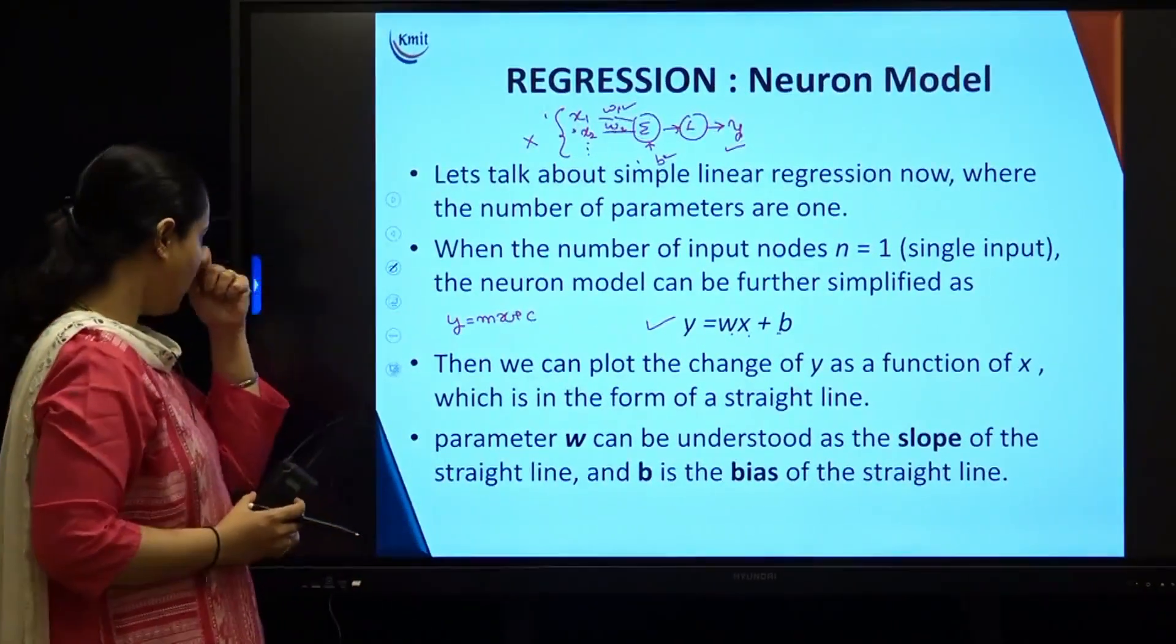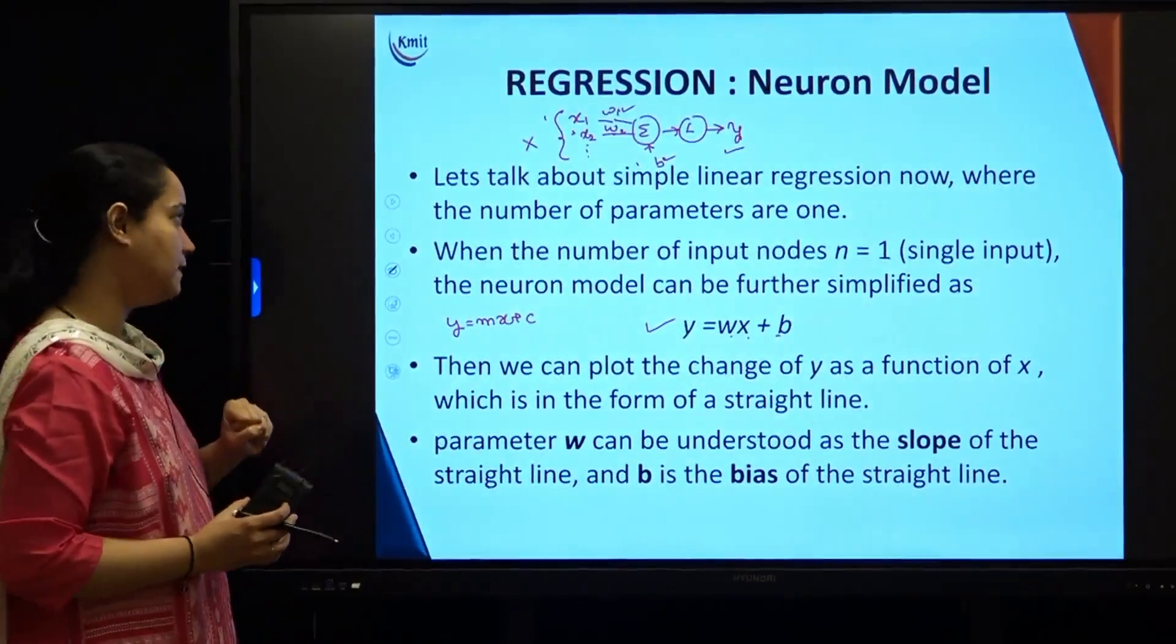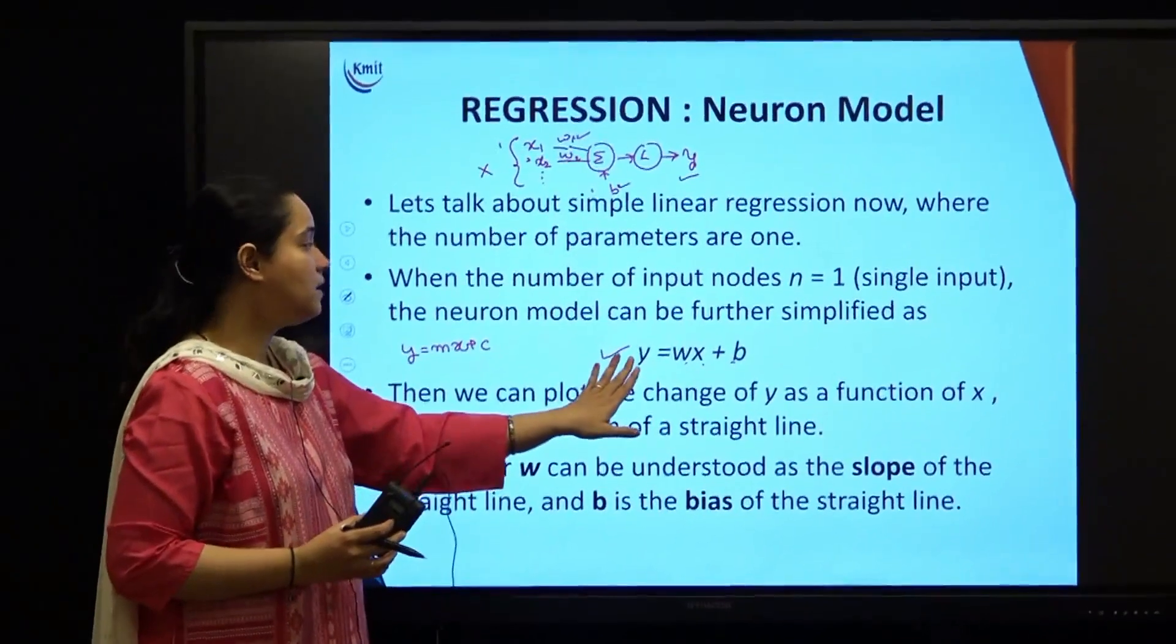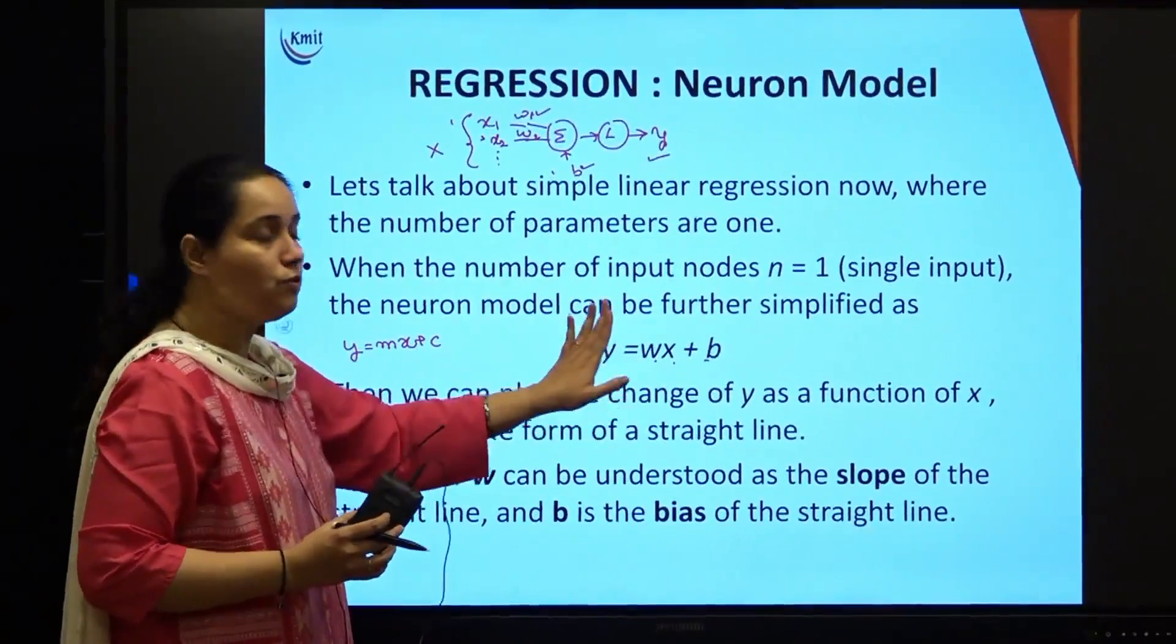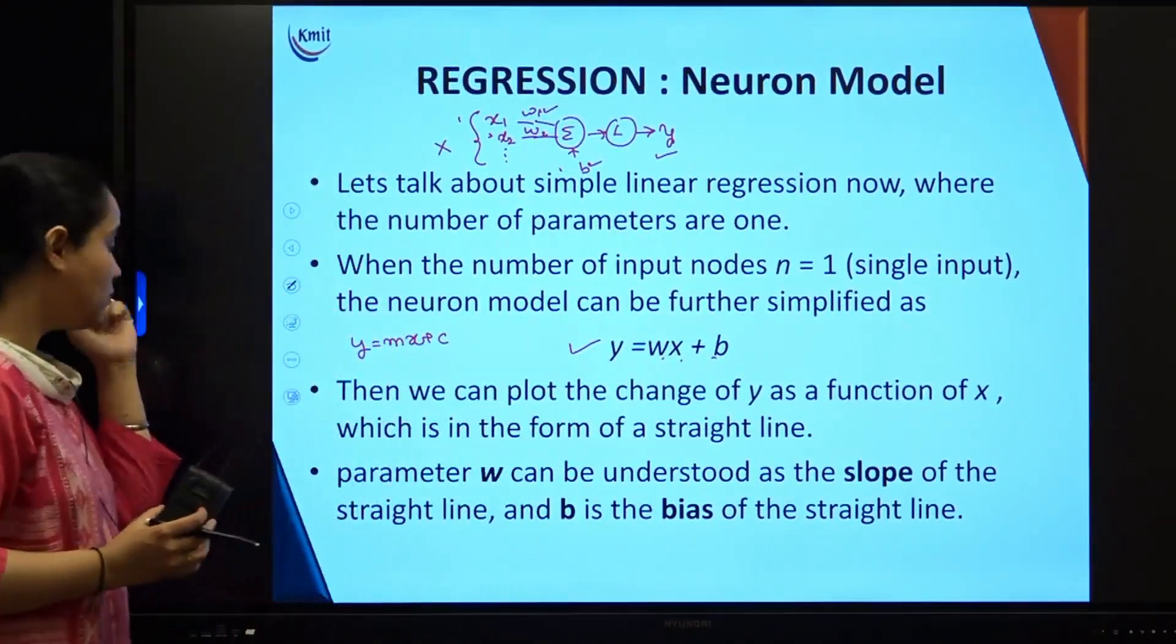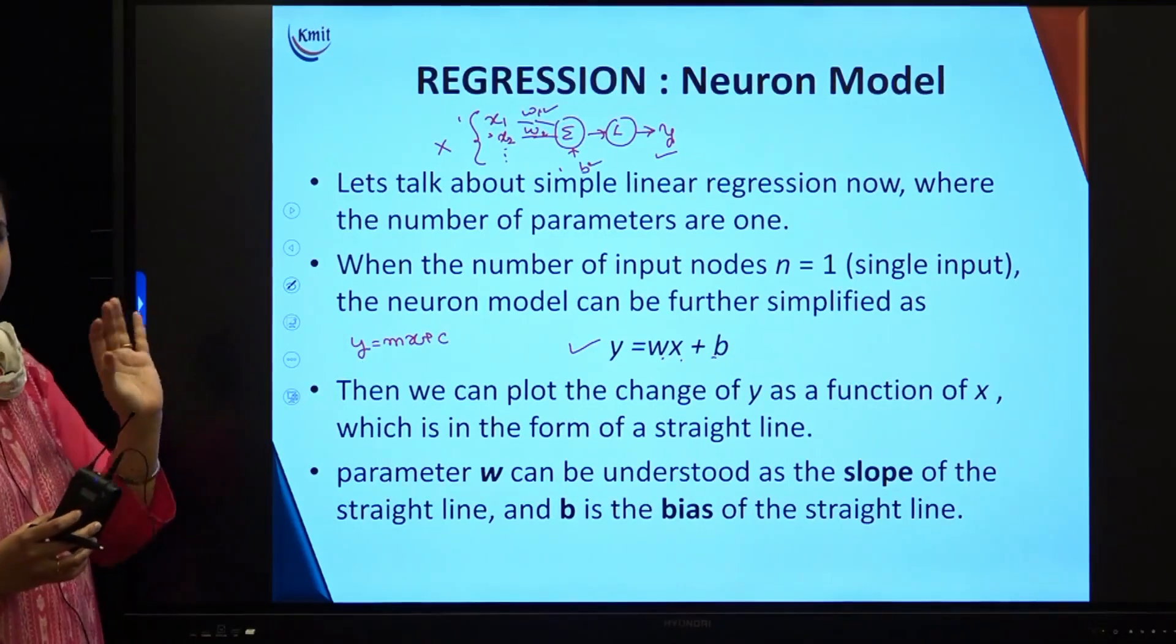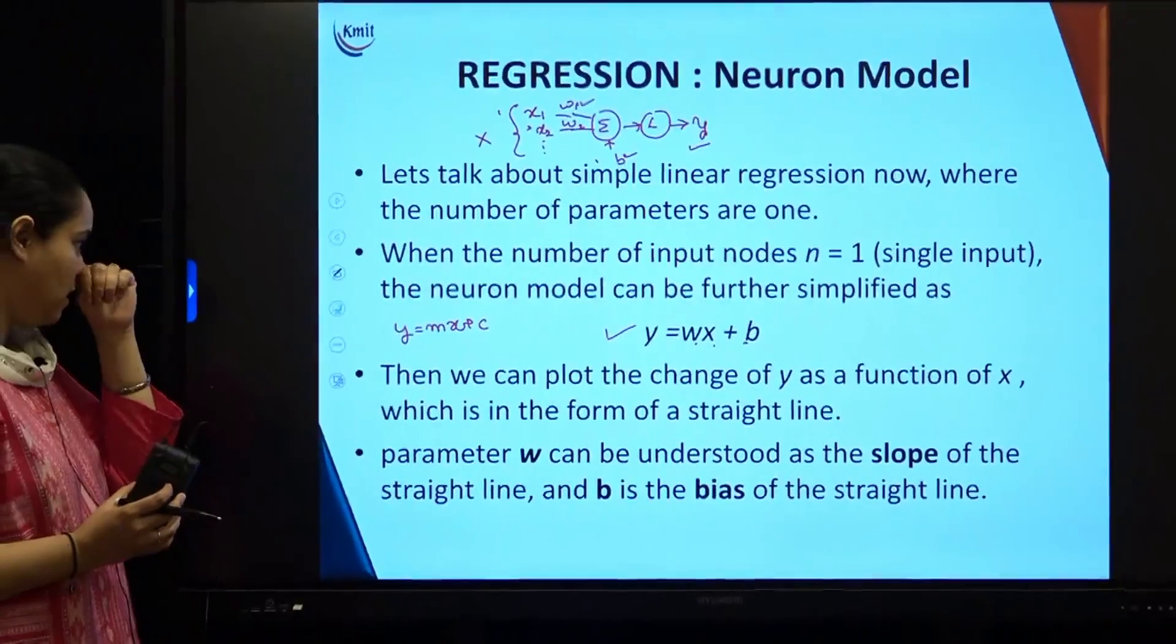When the number of input nodes is one, we have picked up a very simple model. We are going to write single output y, single input x, associated weight with that input as w, and then there is a bias. This looks like a straight line equation, hence it is a linear model.